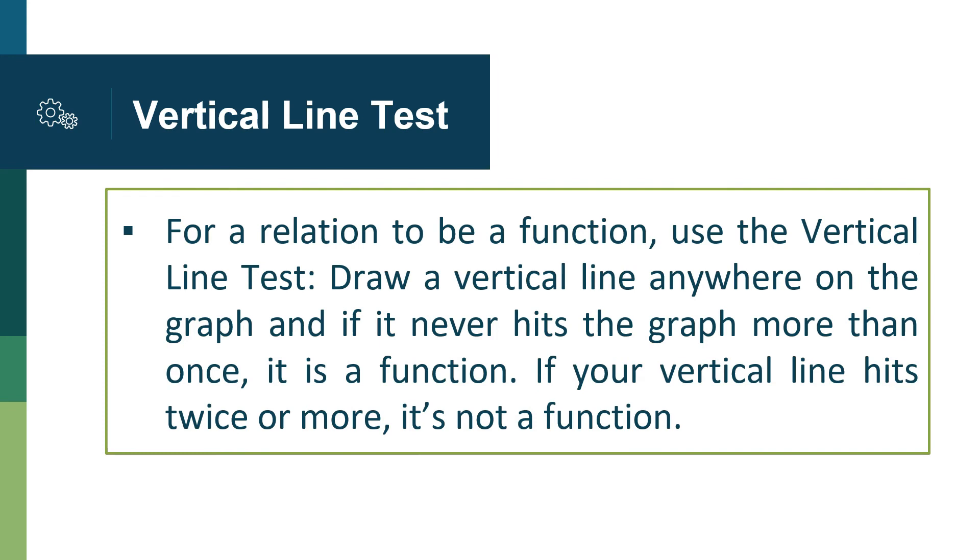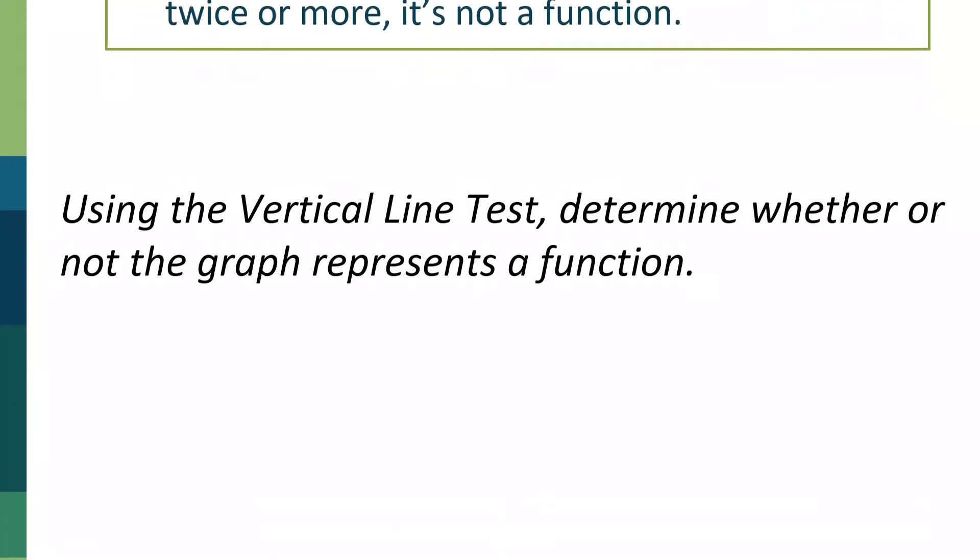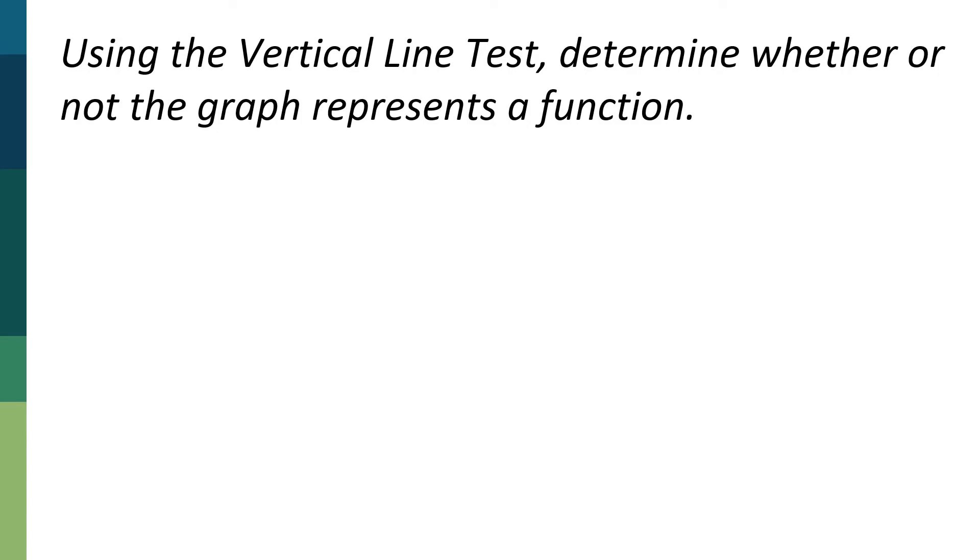In order to demonstrate how to do the vertical line test, let's have these examples. As what's instructed, using the vertical line test, determine whether or not the graph represents a function. So for letter A, given with this graph, we're going to draw a vertical line. So there's a straight line there. And then we're going to count how many times the line intersects with the given graph. So that's 1, 2, 3, and 4. So given by the rule of the vertical line test, the graph must intersect with the vertical line just once for it to become a function. Since it intersected 4 times, meaning to say this one is not a function.